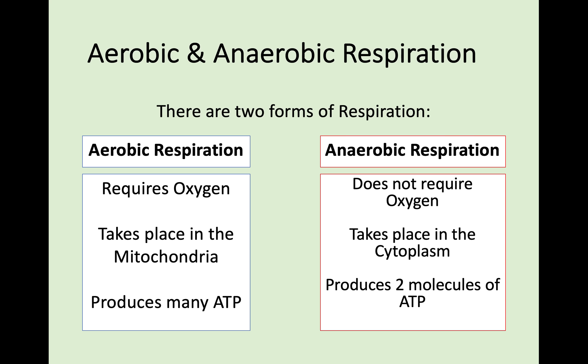We're now going to look at how ATP is produced in the first place. There are two forms of respiration to know the difference between. First, there is aerobic respiration. Hopefully that rings a bell from Key Area 1 cell structure, where you found out that the mitochondria is the site of aerobic respiration. Aerobic respiration requires oxygen — oxygen must be present. It takes place in the mitochondria and it is a very effective way of producing energy, producing many molecules of ATP — the best form of respiration.